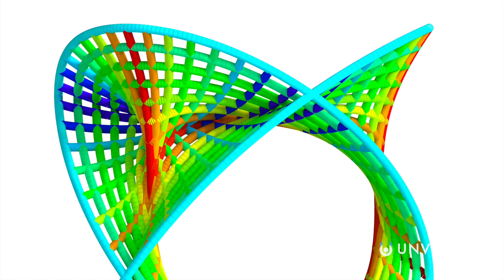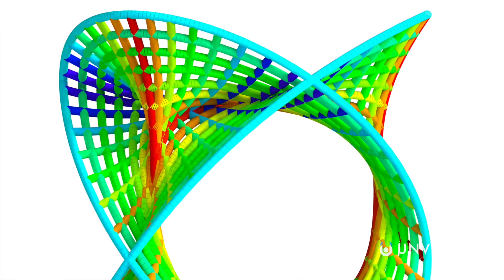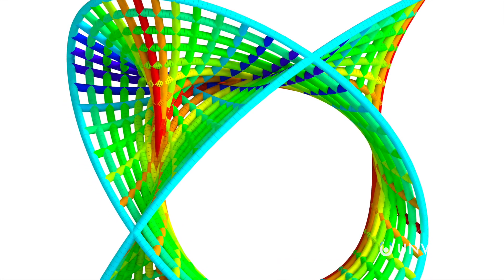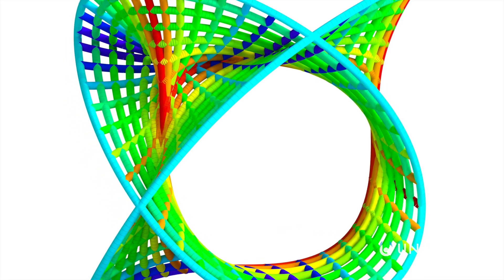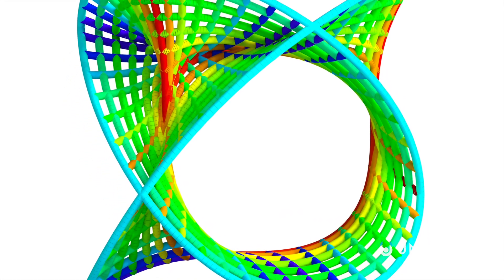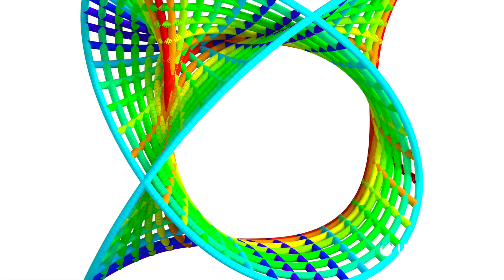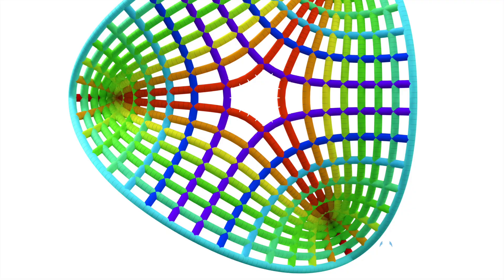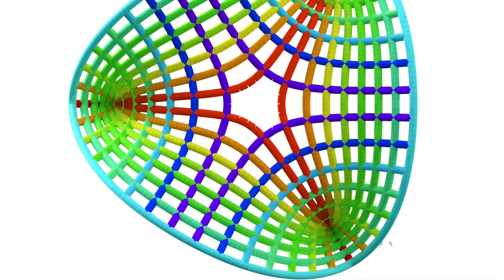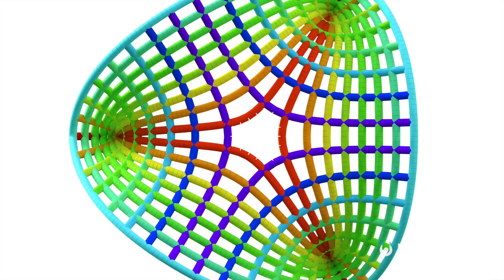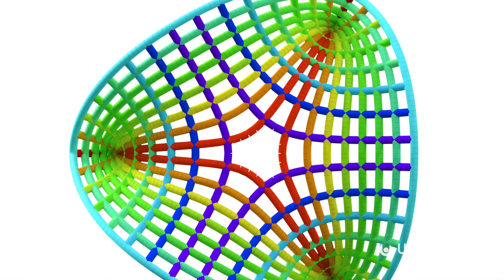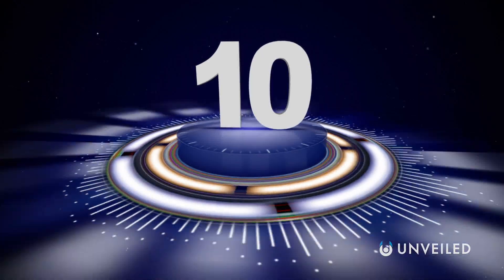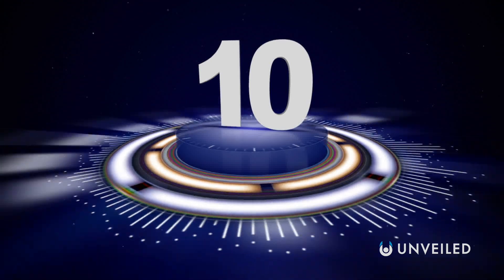According to superstring theorists, there are at least ten dimensions in total – four regular dimensions and six smaller, compact dimensions that curl up in on themselves to form a structure called a Calabi-Yau manifold. While this structure is impossible to imagine in its entirety, there are 2D cross-sections of what it's thought to look like.